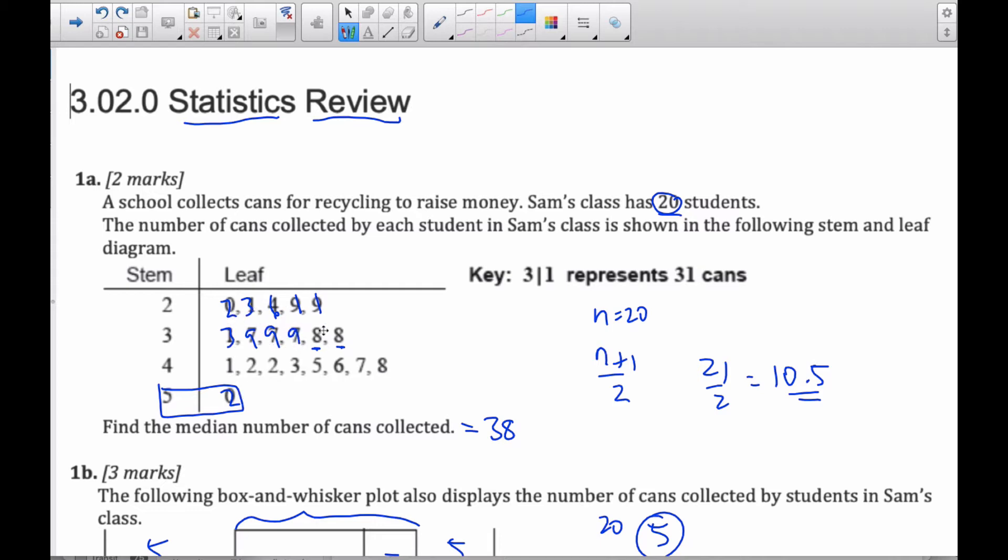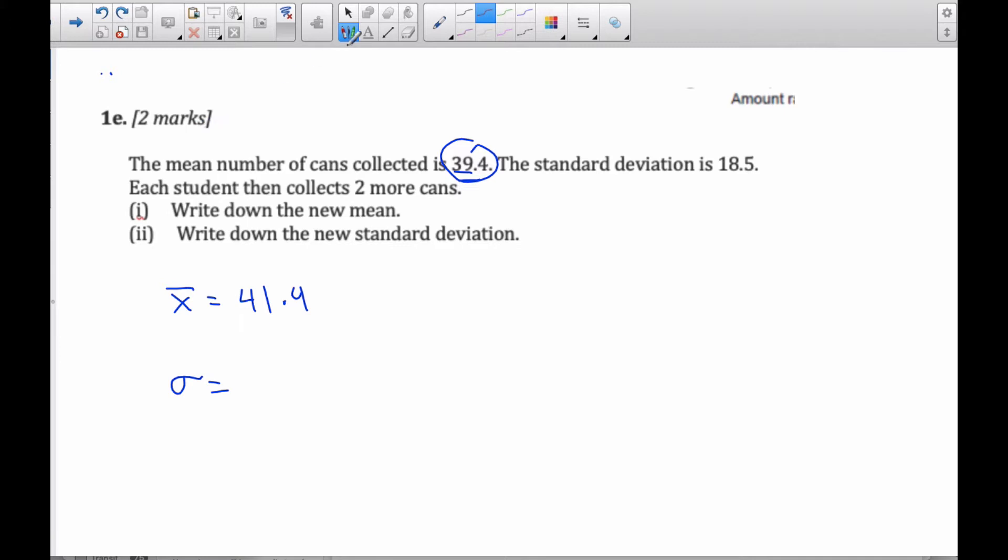And so they're still the exact same amount of spread. Here's a distance. All that's happened is all these values have shifted up the same amount. If this spread would have gotten bigger, then the standard deviation would change. But the spread stayed the same. And so the standard deviation here is also going to maintain being 18.5. Standard deviation is sigma, or I could also call it S.